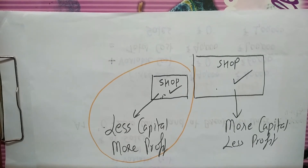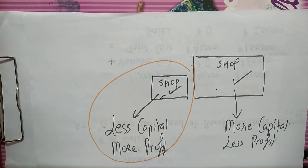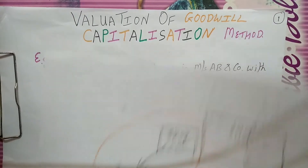Could be possible — why? Because people have faith on that vada paan wala. He must have been there for so many years. People found it of very good quality. People did not fall sick. Bolne ka matlab ye hai ki capital aur profit proportionate nahi hota hai. Sometimes by employing less capital, you may earn more profit. Let's take an example to understand this.